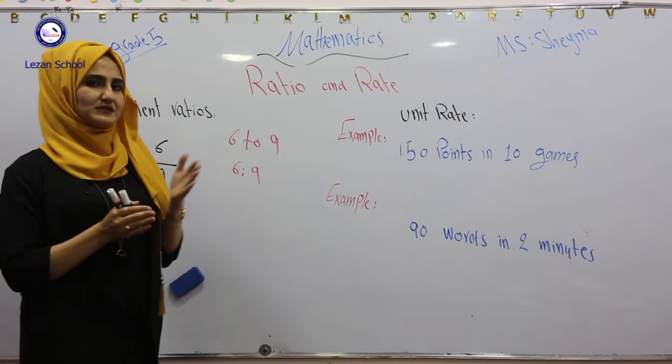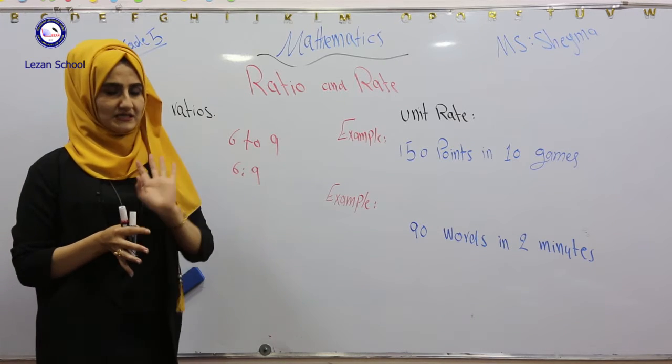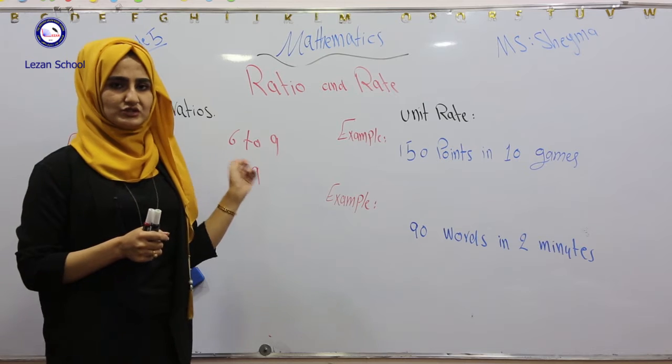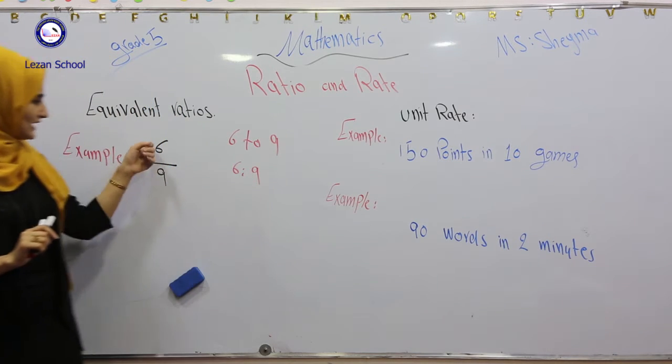We can find equivalent ratios by multiplication or by division. By multiplication, multiply any number as you like except zero. But for division, you should find the number that can evenly divide both numbers. In here, we have 6 over 9.